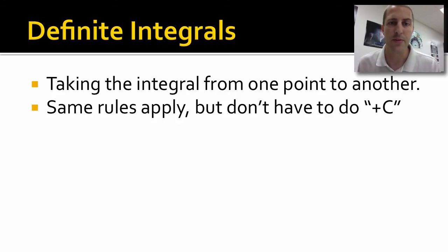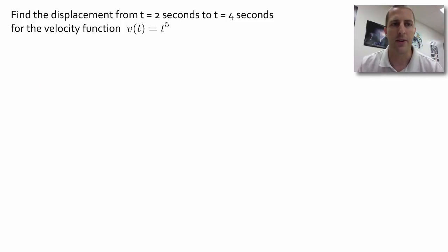There's one more type of integrals. This one is called a definite integral. We're taking the integral from one point to another. The same rules apply, but you don't have to do the plus C. There is one more step though. Let's try it here. We have a velocity function t^5.